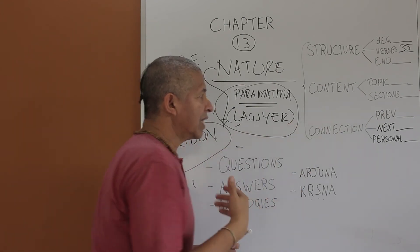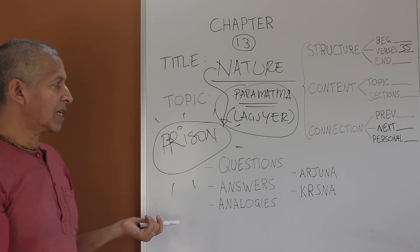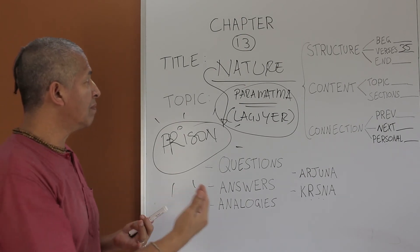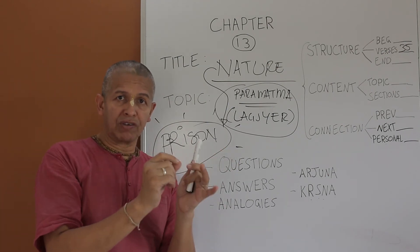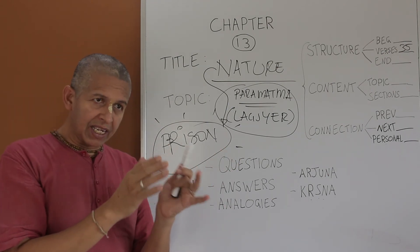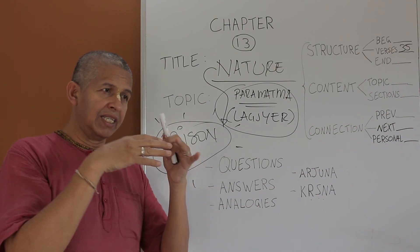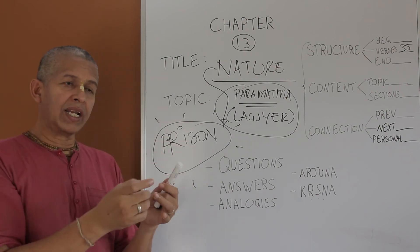With the previous chapter, the connection with the next chapter, chapter 14, called the modes of material nature. Here, Krishna twice refers to the modes of nature. He's explaining, he's giving the detailed information, what a jiva, a living entity, a spirit soul, needs to get out of the material prison.